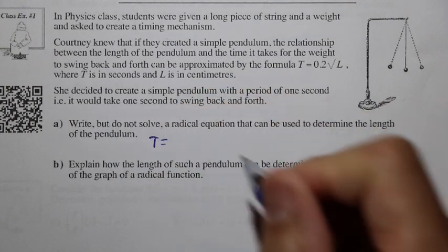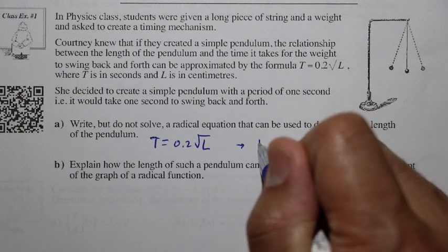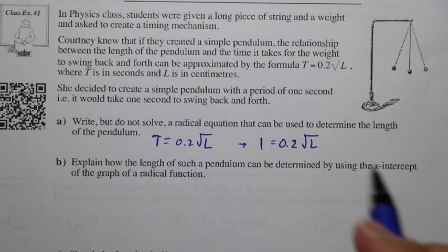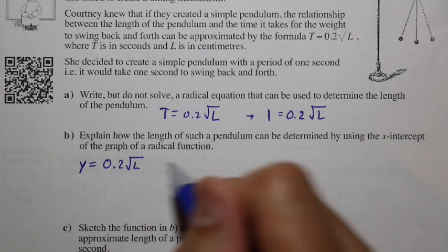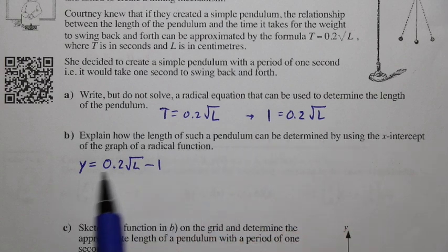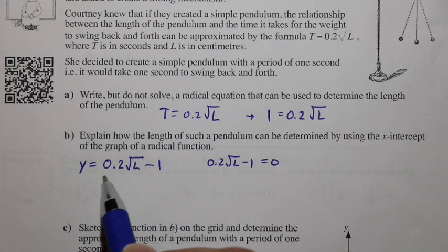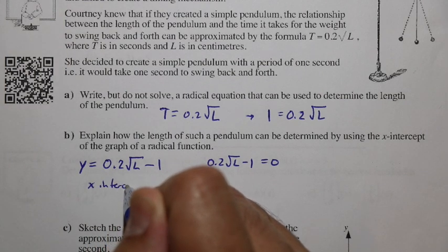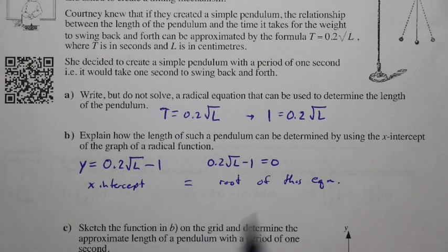The general formula is t equals 0.2 square root of L. Replacing t with 1 second gives us 1 equals 0.2 square root of L, with L as the only unknown. To find the length using the x-intercept and the graph, we can define y equals 0.2 square root of L minus 1. By subtracting 1, the equation equals 0, so the root of this equation is the same as the x-intercept of the graph. That x-intercept equals the root and also the solution of the equation.